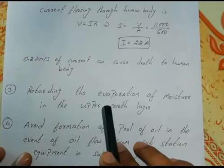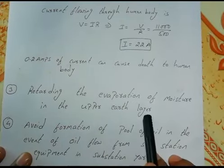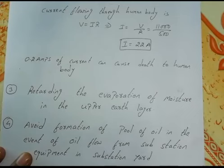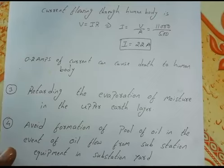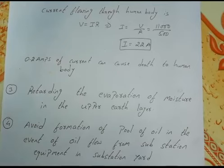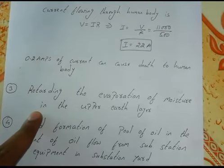The third point is retarding the evaporation of moisture in the upper earth layer. When you put gravel in the substation yard, the gravel gets heated up because of the sun. This increased temperature above the substation yard decreases the moisture content in the soil, thereby increasing the resistivity and indirectly acting as an insulator.